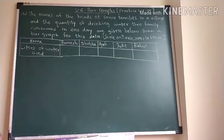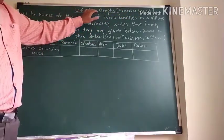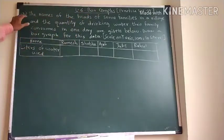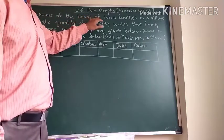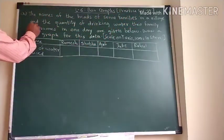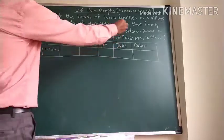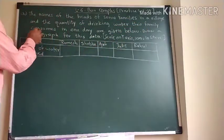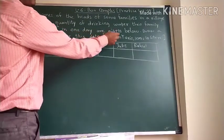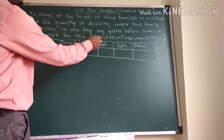Now we are going to see Practice Set 19 of Lesson No. 6 Bar Graphs. Question No. 1 is the names of the heads of some families in a village and the quantity of drinking water their family consumes in one day are given below. Draw a bar graph for this data.